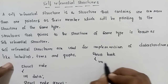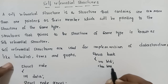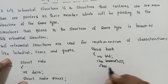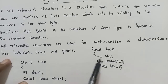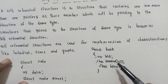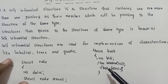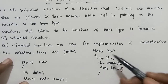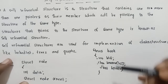Suppose there is a structure called book. It has a Book ID of integer type, a Book Name of char type, and a Book Price of float type. So, integer, char, and float are different data types combined as a single entity — this is a user-defined data type called structure.